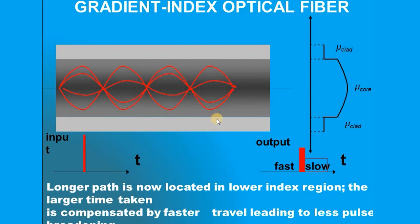There will still be pulse broadening in multi-mode fibers compared to single mode. However, pulse broadening is considerably reduced in graded index fiber because rays taking longer paths travel faster — the larger time taken is compensated by faster travel. Hope you understood — we have discussed the classification of fibers on the basis of material, mode of propagation, and refractive index.